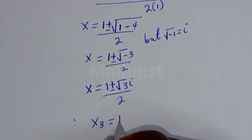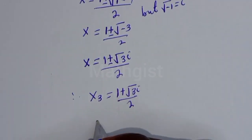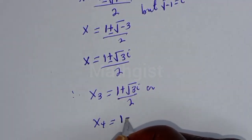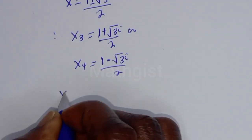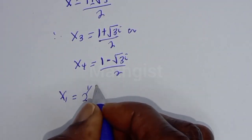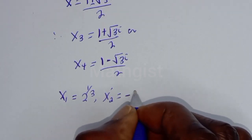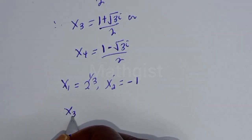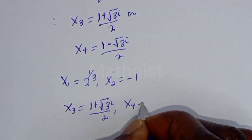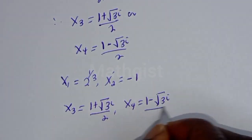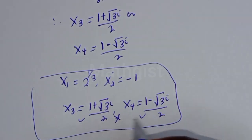So s is equal to 1 plus square root of 3i over 2, or s is equal to 1 minus square root of 3i over 2. The value of s1 is equal to 2 raised to the power of 1 over 3, s2 is equal to minus 1, s3 is equal to 1 plus root 3i over 2, and s4 is equal to 1 minus root 3i over 2. But s3 and s4 are imaginary solutions, so we don't want these.